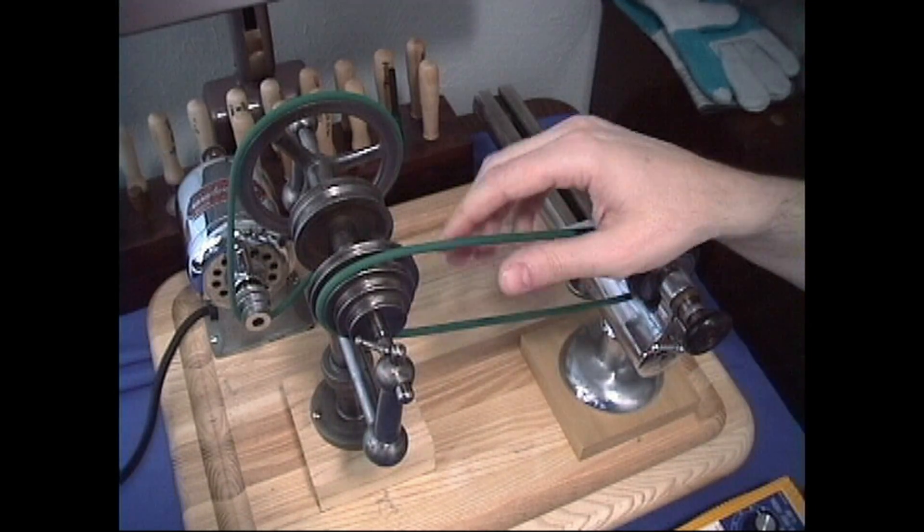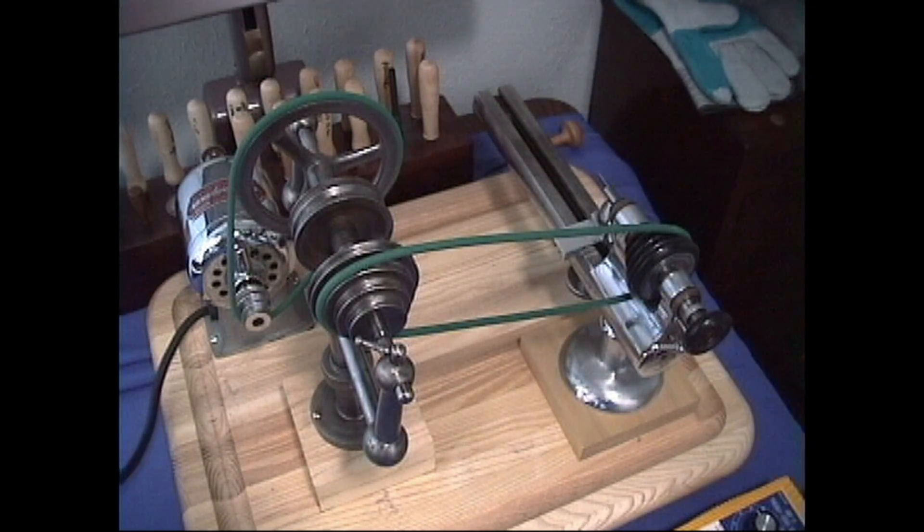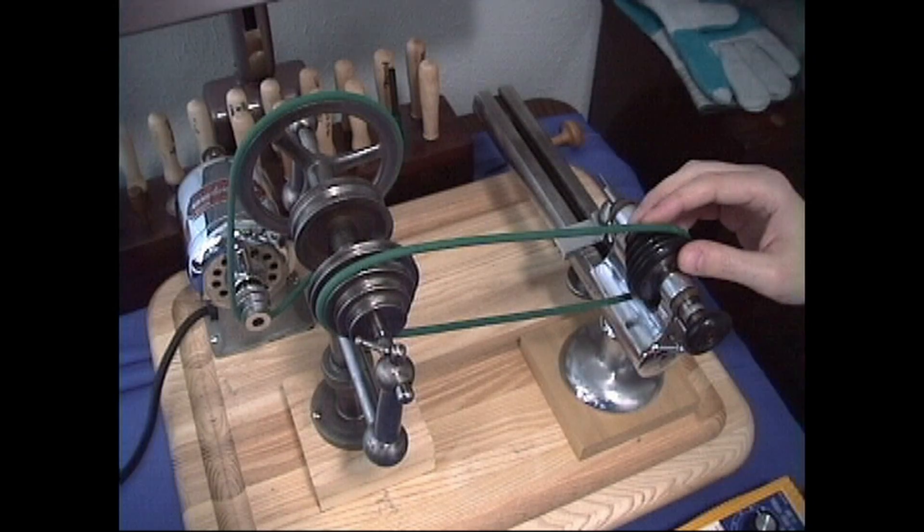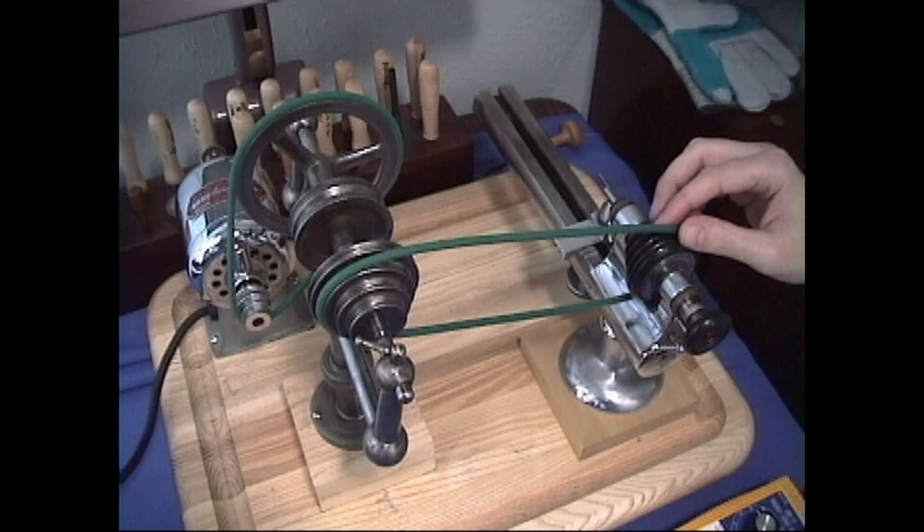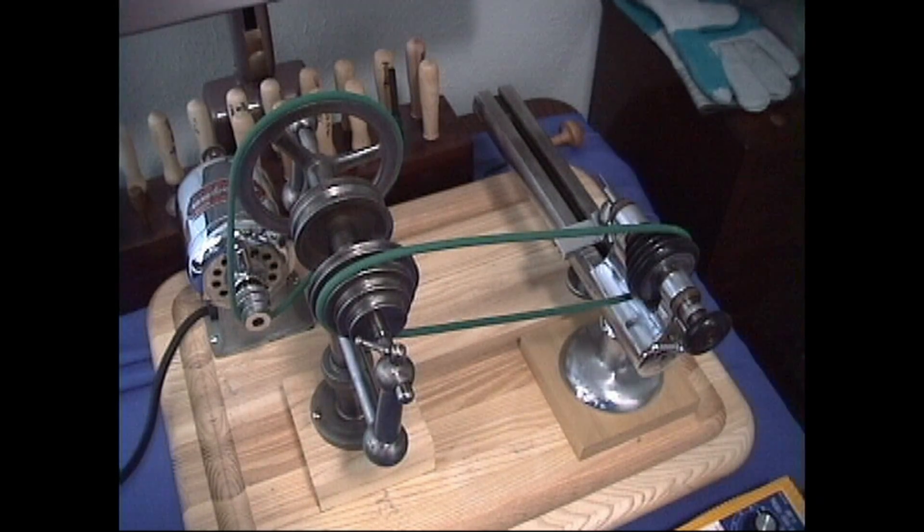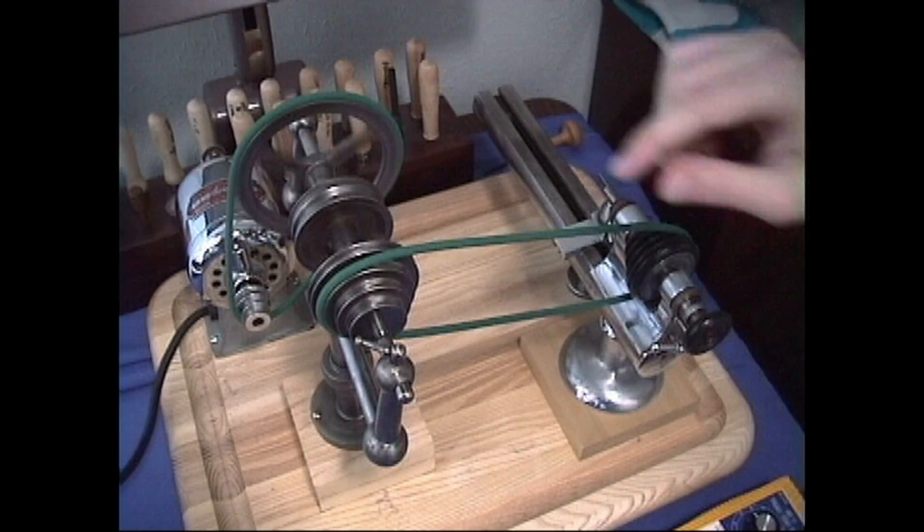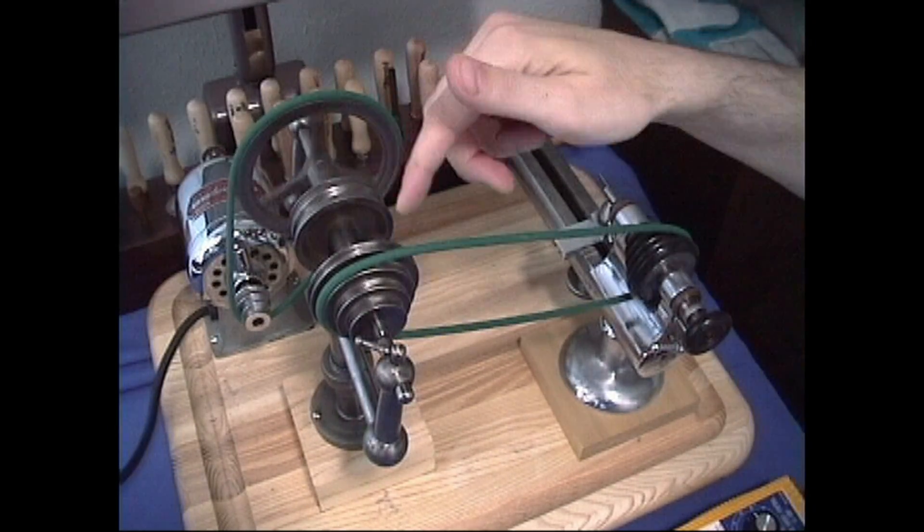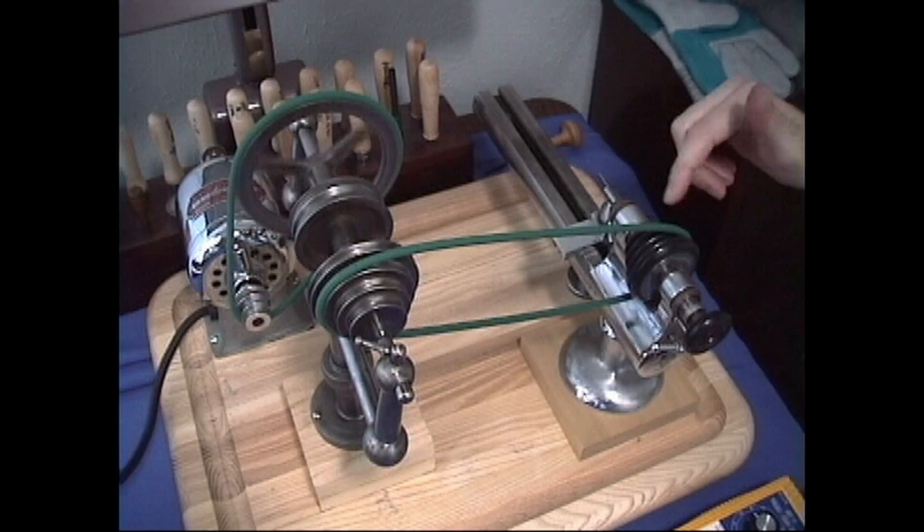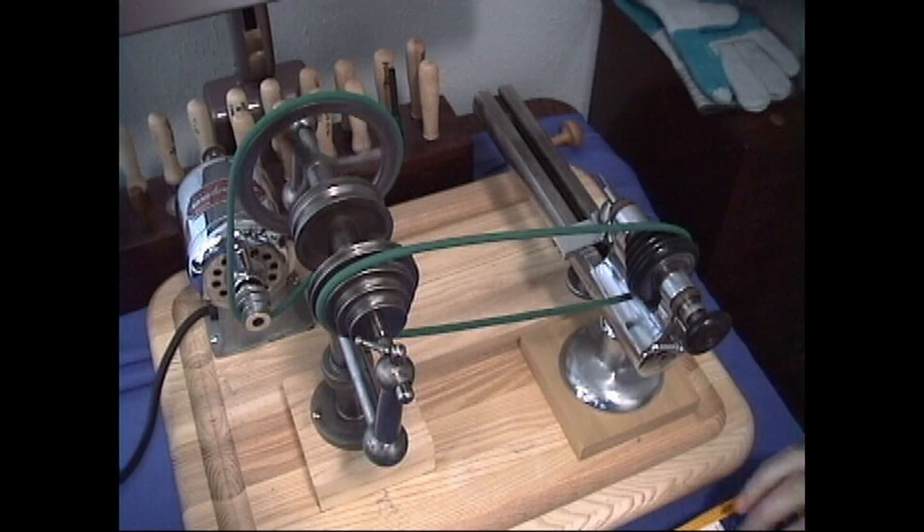If you move the belt back and forth it's just as effective in terms of changing the torque and speed that you're working on. When this runs, you can see where the motor is running the large wheel which in turn runs this, which in turn runs your lathe.